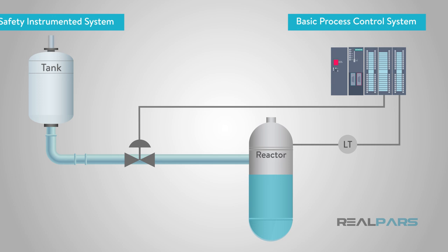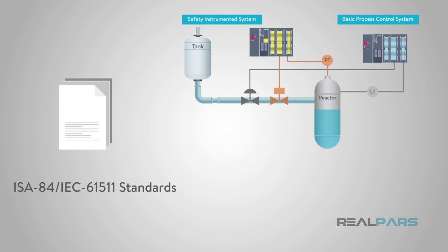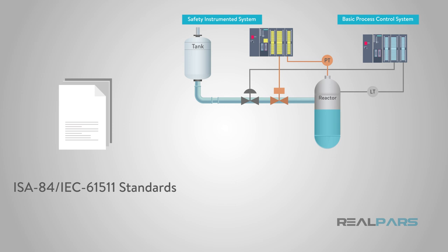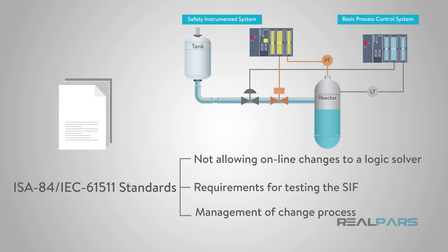When designing a safety instrumented system, the ISA 84 / IEC 61511 standards prescribe a methodology for developing and documenting the system. Certain design principles should be followed, such as not allowing online changes to a logic solver, requirements for testing the SIF, and a management of change process for making any changes to the system once the design has been approved.